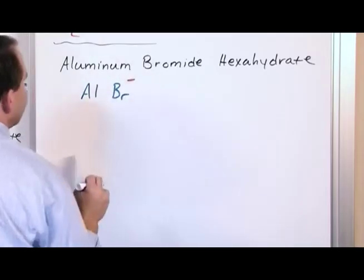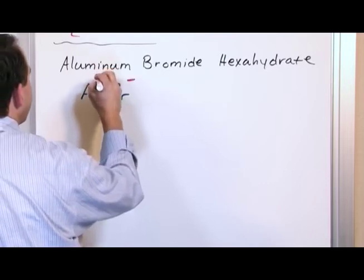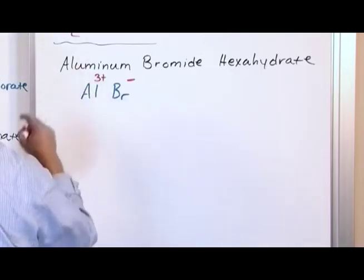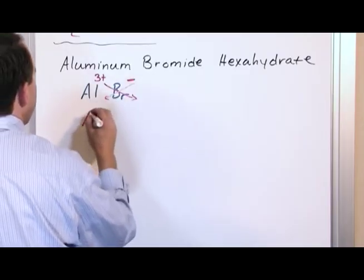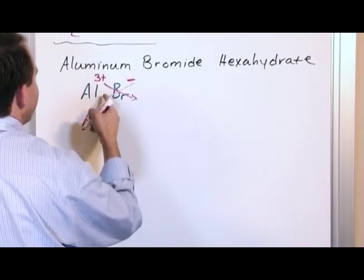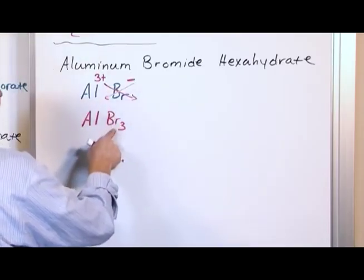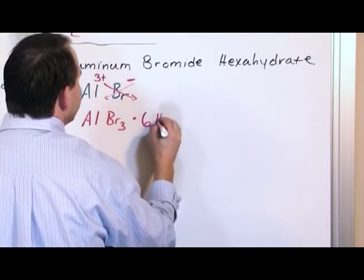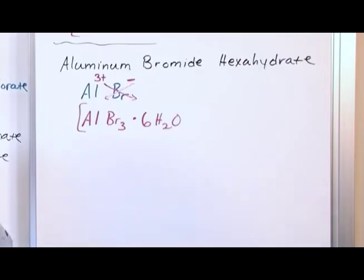Bromine is always going to have a negative one charge. You can see that on the periodic table. Aluminum, you'll probably end up memorizing, it always wants to have a plus three charge. Somewhere in your book there'll probably be a table of these transition metals. Aluminum usually just likes to form plus three. So we'll do the crisscross, and we'll have Al, the one coming from here, three going here, Br3. So aluminum bromide is right here. Hexahydrate - hexa means 6H2O. So AlBr3·6H2O.